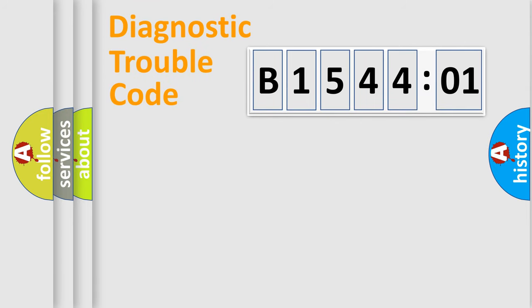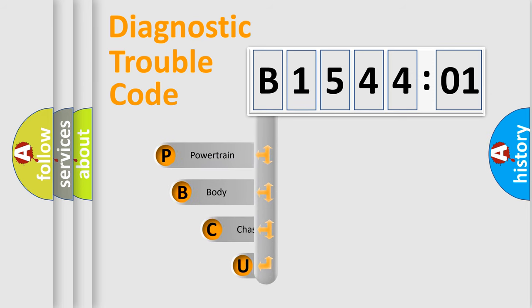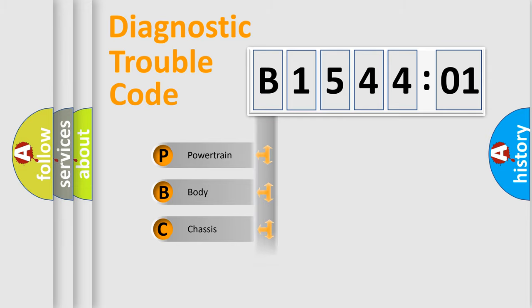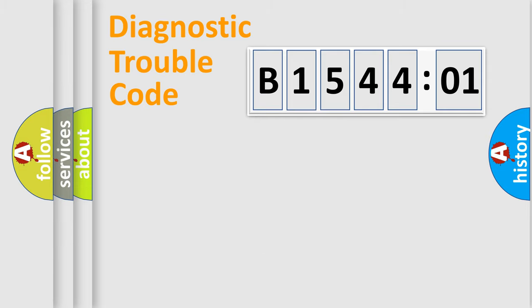Let's do this. First, let's look at the history of diagnostic fault code composition according to the OBD2 protocol, which is unified for all automakers since 2000. We divide the electric system of an automobile into four basic units: Powertrain, Body, Chassis, and Network.